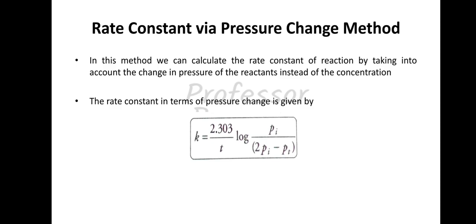Next, the rate constant via the pressure change method. In this method, we can calculate the rate constant of a reaction by taking into account the change in pressure of the reactants instead of concentration. The equation is: k equals 2.303 upon t, into log of Pᵢ upon (2Pᵢ − Pₜ), where Pᵢ is the initial pressure and Pₜ is the total pressure at time t.